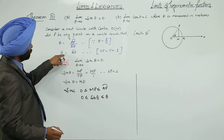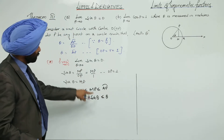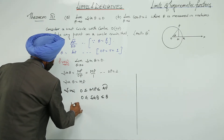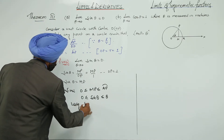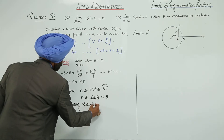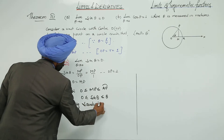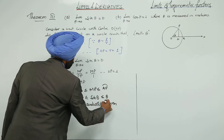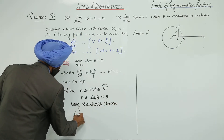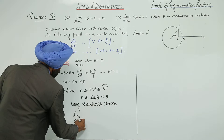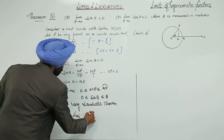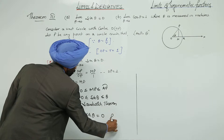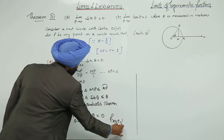Arc AP equals theta. Using the sandwich theorem, limit theta approaches 0, sin theta equals 0. We have proved the first part.